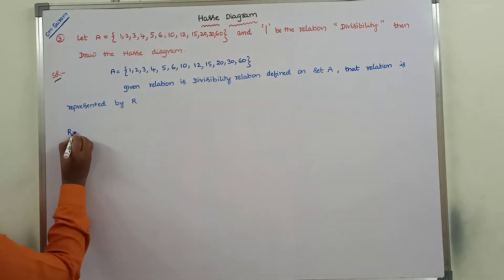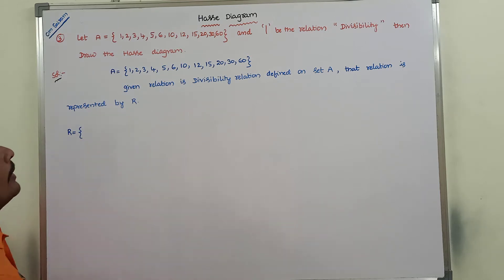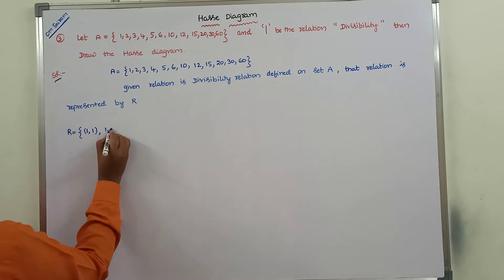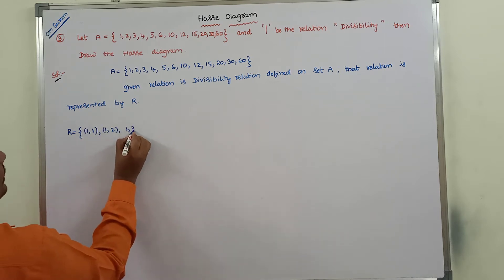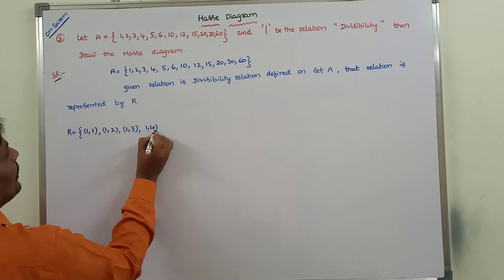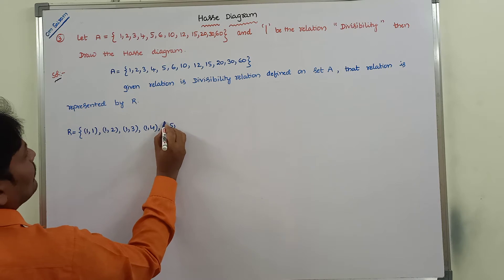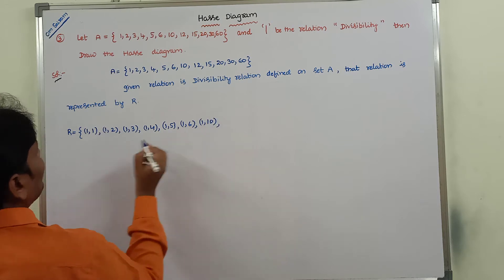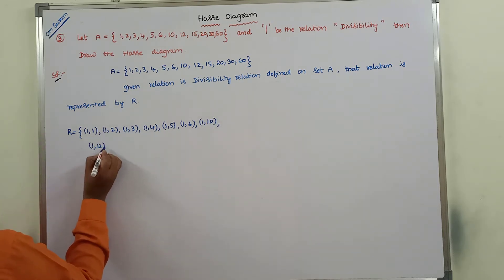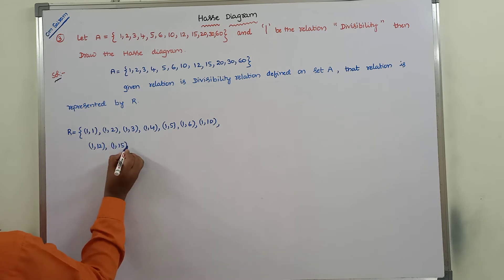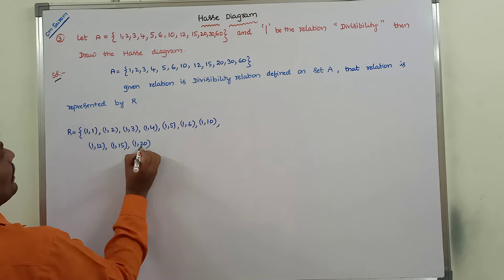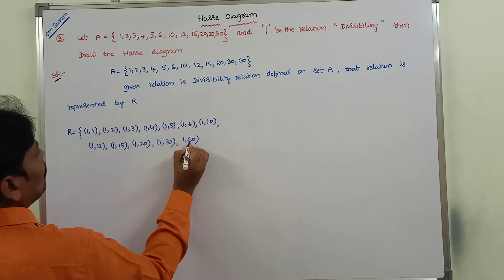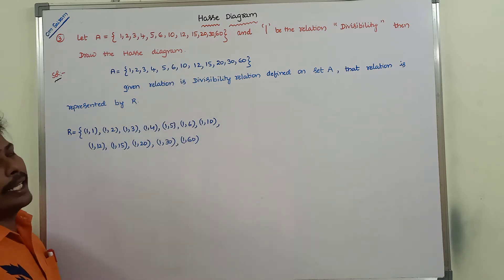So what are the ordered pairs in the given relation R? First we are taking 1: 1 divides 1, 1 divides 2, 1 divides 3, 1 divides 4, 1 divides 5, 1 divides 6, 1 divides 10, 1 divides 12, 1 divides 15, 1 divides 20, 1 divides 30, and 1 divides 60. So 1 divides all the remaining elements in the given set.